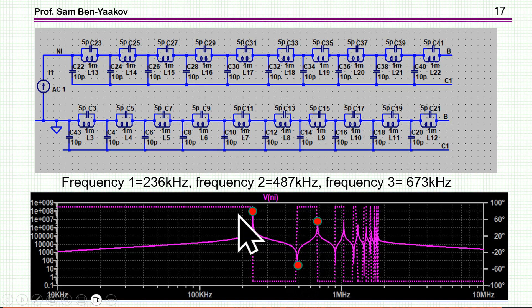and I'm now referring to these three resonances that I'm going to model, and measuring it after simulation, we see that here we have the three frequencies, 236, 487, and 673 kilohertz. These are the three resonances, okay?